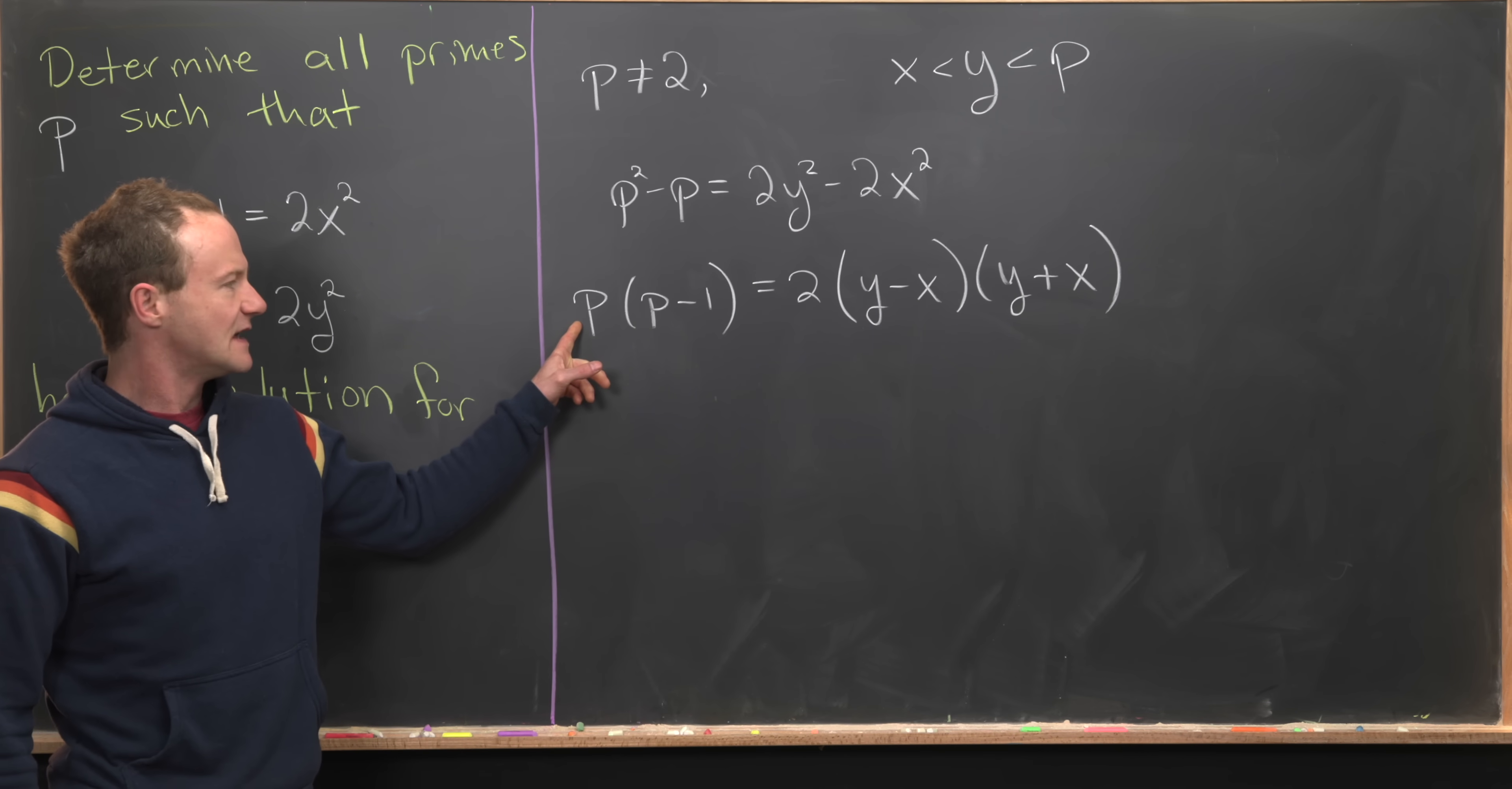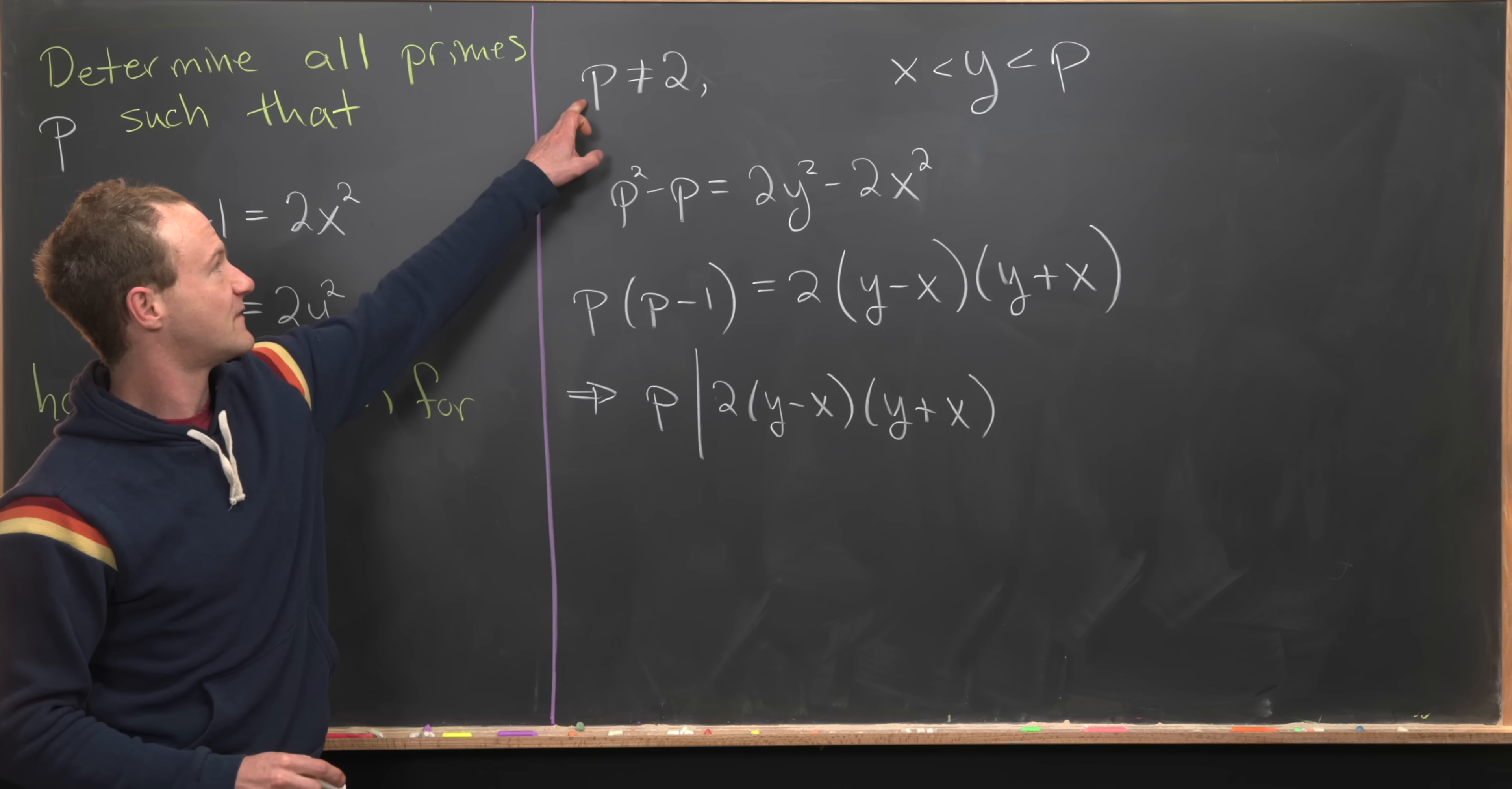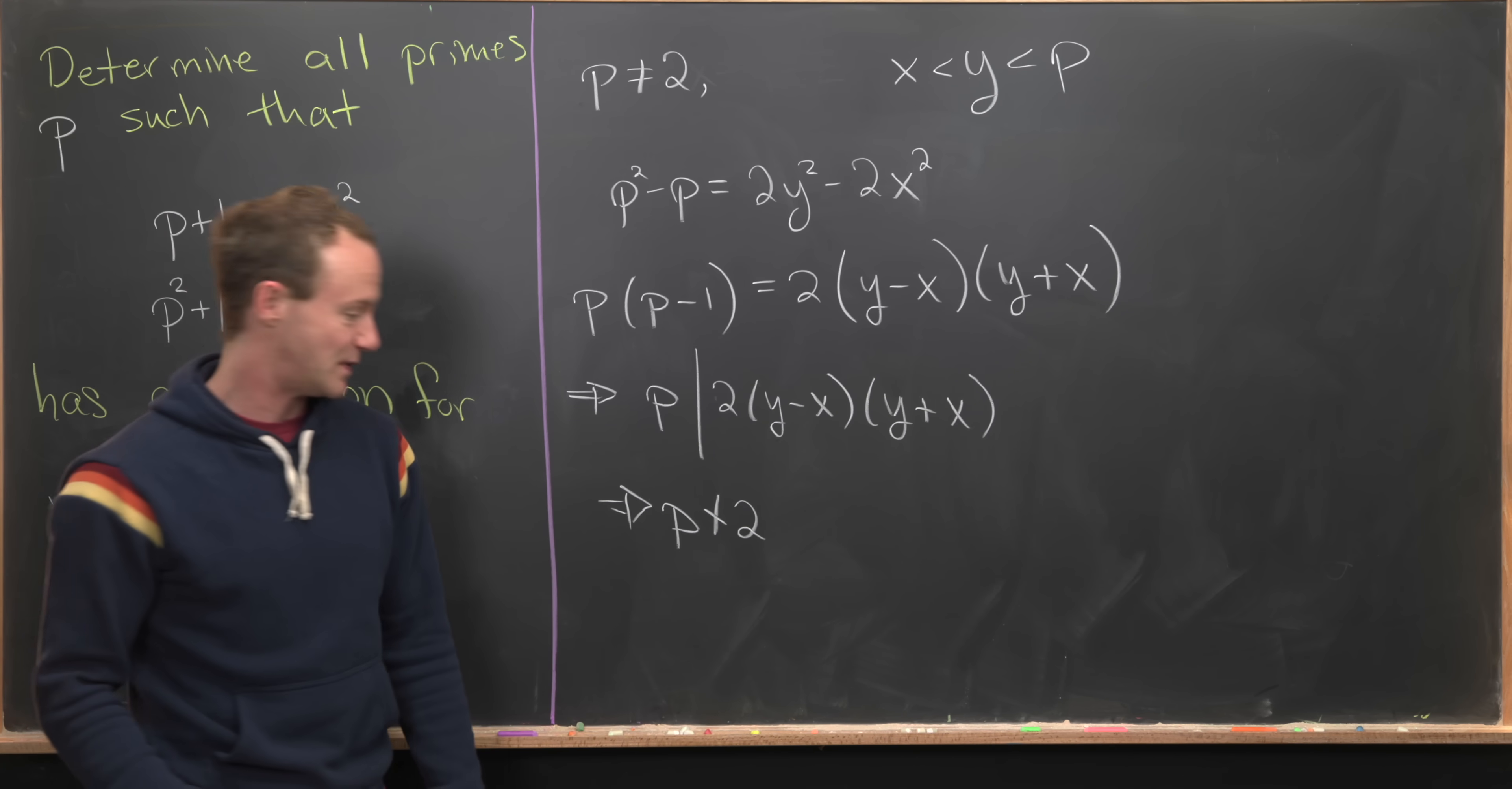Now notice that p divides the left-hand side of the equation, which tells us p divides the right-hand side. So we have p divides 2(y−x)(y+x). But given that p is not equal to 2, we see that p does not divide 2.